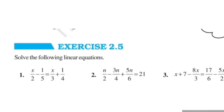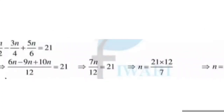Now see the second question: n upon 2 minus 3n upon 4 plus 5n upon 6 is equal to 21. All the variables are already on the left hand side but the denominators are different, so first we find the LCM, which is 12.